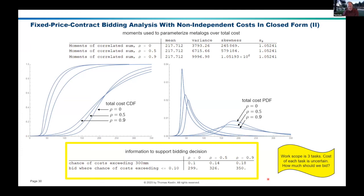Notice that all of this is in closed form — none of this required simulation. This can be done on a spreadsheet. You create your little bidding spreadsheet, stick in your appropriate numbers, and play around with them to get some ballpark insight as to what correlated costs might do.